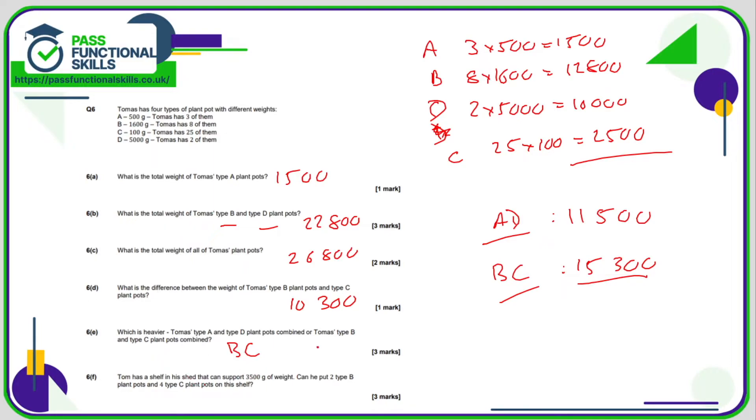So 6F, Tom's got a shelf in his shed that can support 3,500 grams. So can he put two type B on there? Well, type B is 1,600. So 1,600 times 2, that's 3,200. So already he's quite close. And he's adding on top four type C, so that's four times by 100, which is 400. So combine these together, that comes to a total of 3,600. That's going to be too much weight for the shelf because 3,600 is greater than 3,500. So can he put that on the shelf? The answer is no.